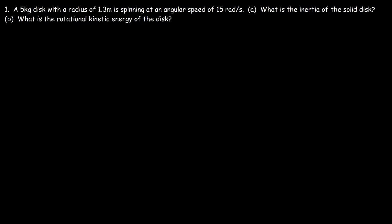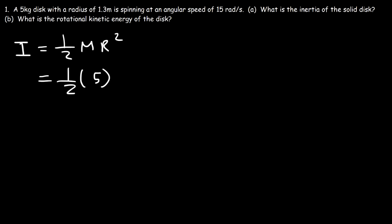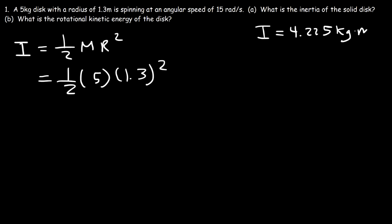Let's start with the inertia. The inertia of a disk is equal to one half times the mass of the disk times r squared. We have the mass of the disk which is 5 kilograms and the radius is 1.3 meters. So it's half times 5 times 1.3 squared, and the inertia of the disk is 4.225 kilogram times square meters.